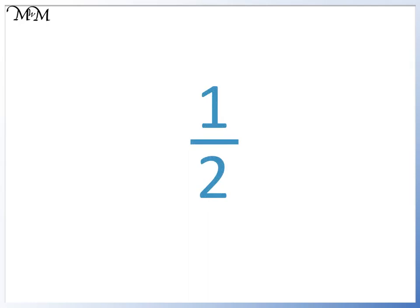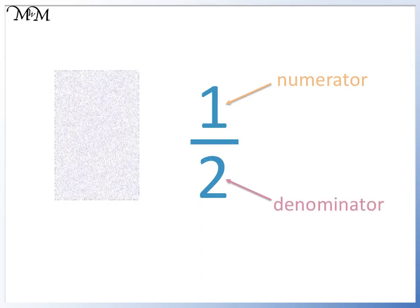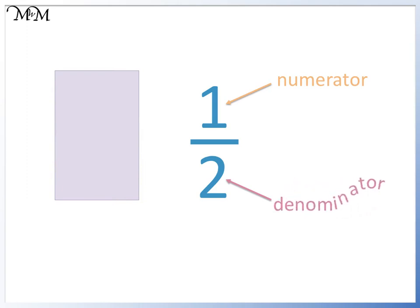We'll begin by looking at the fraction one-half. The number at the top is called the numerator, and the number at the bottom is called the denominator. The denominator, which is 2, tells us how many parts a shape is divided into.